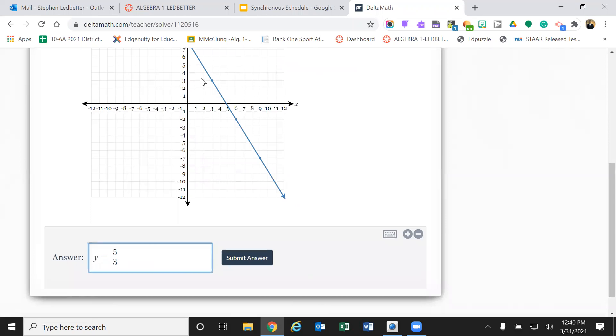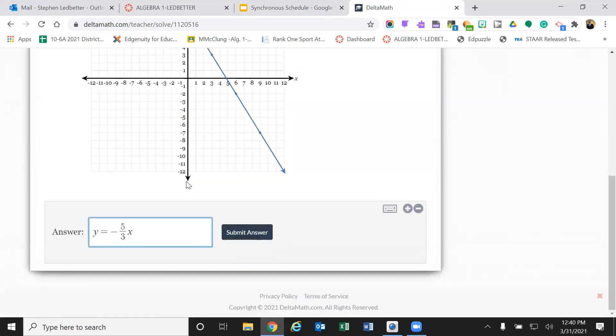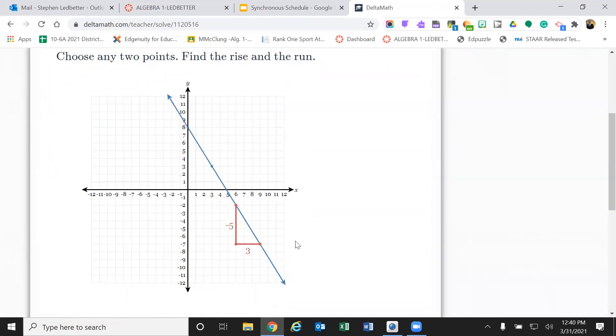And since I went down five and then over three, and since I'm going down, it has to be a negative slope. I'm going to put an x in front of it. Now, where does my line cross the y-axis? It looks like a positive eight. So I'm going to put plus eight. Yay, me.